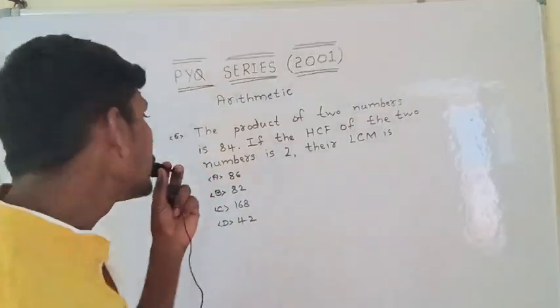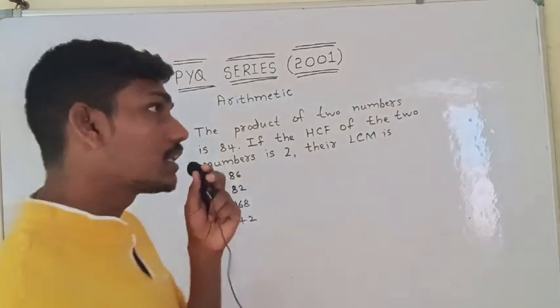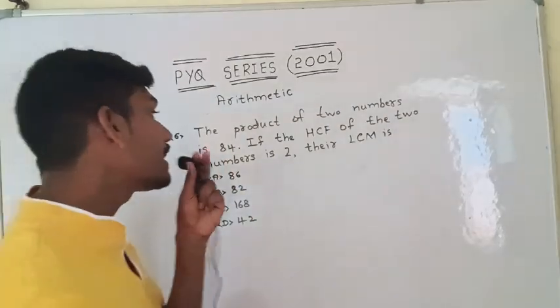Next question, the product of two numbers is 84. Product of two numbers, multiply. What is the product? 84.